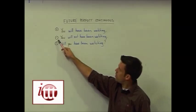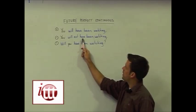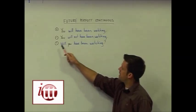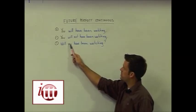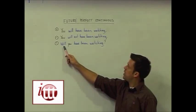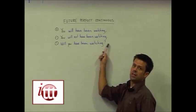For our negative form, we're simply inserting the word 'not' between will and have. To ask our question, we invert will with the subject. Here we're using 'you', and we come up with the question: will you have been watching, and the rest of our sentence.